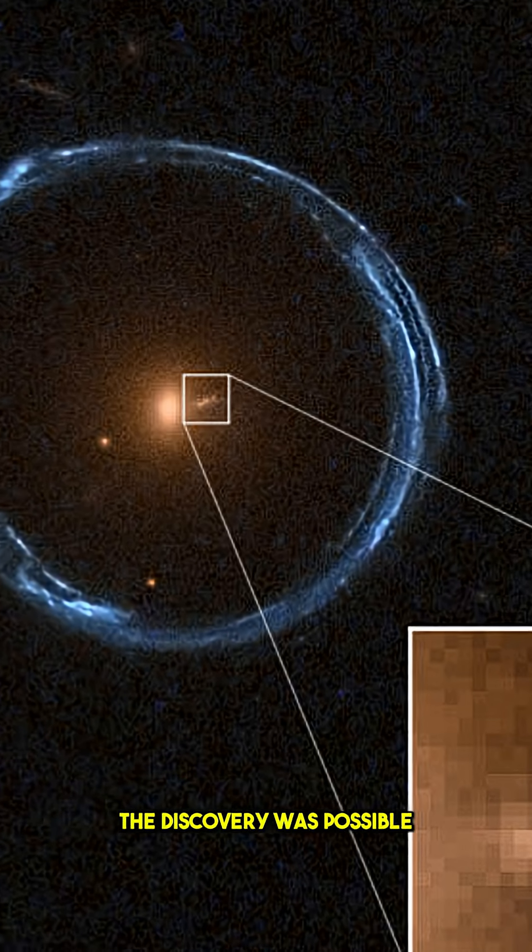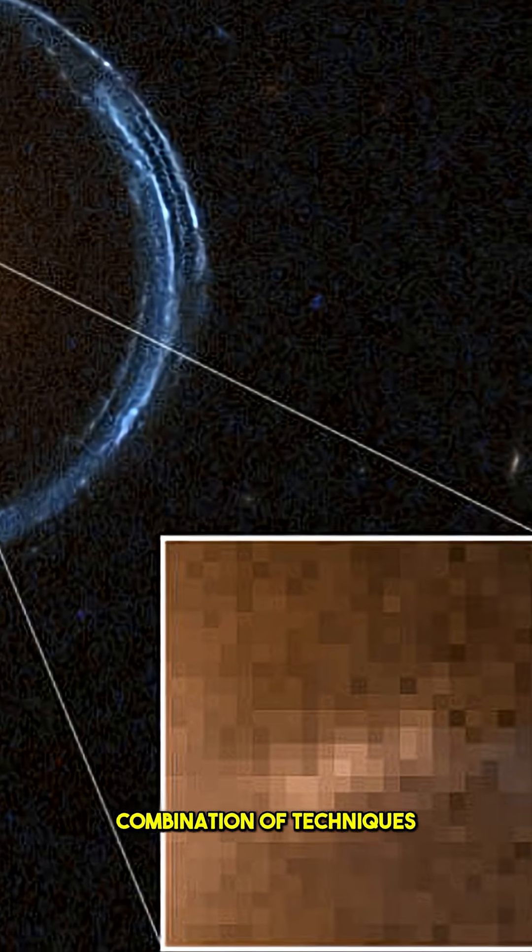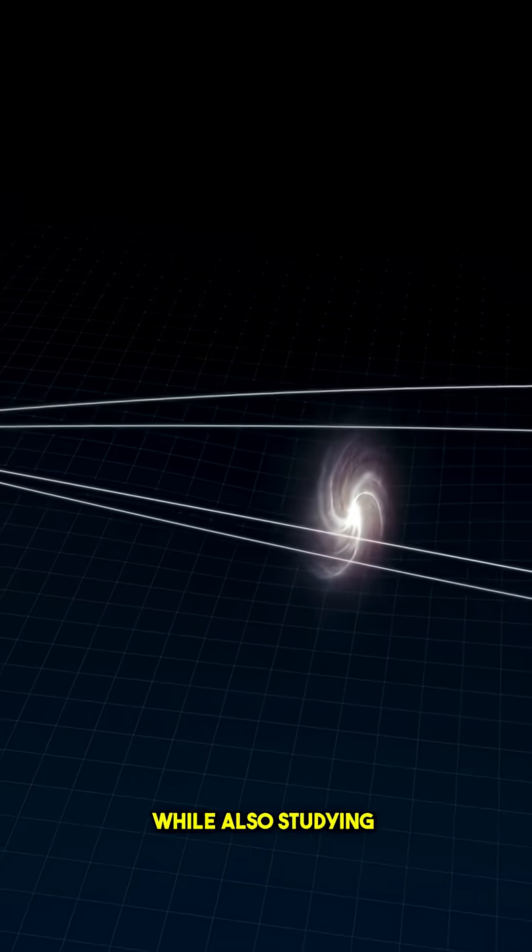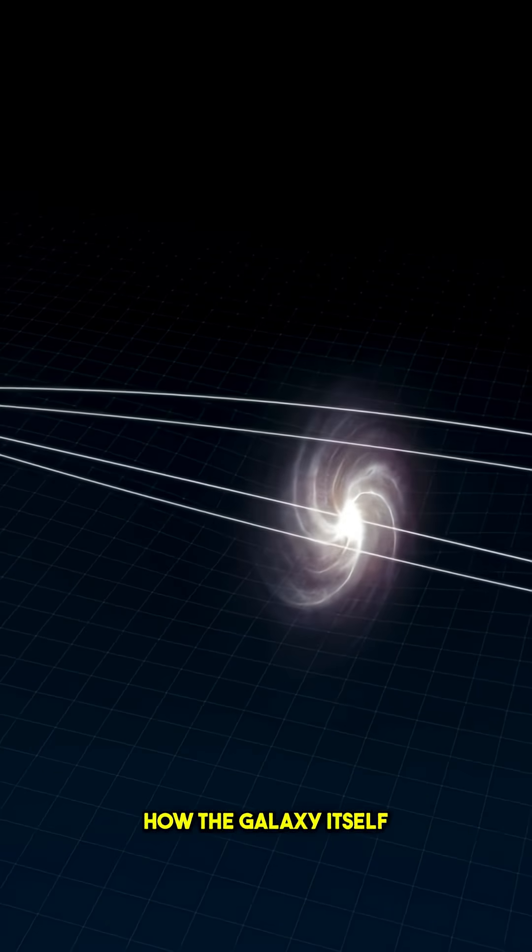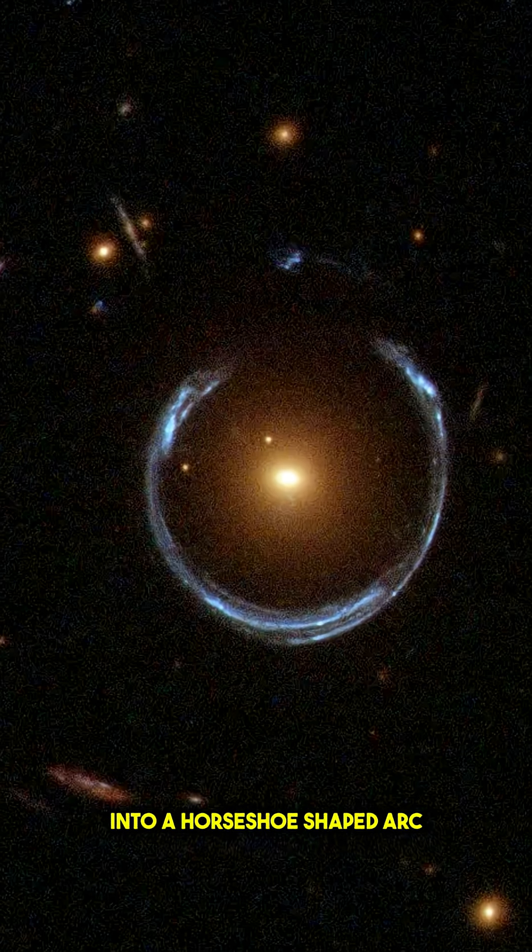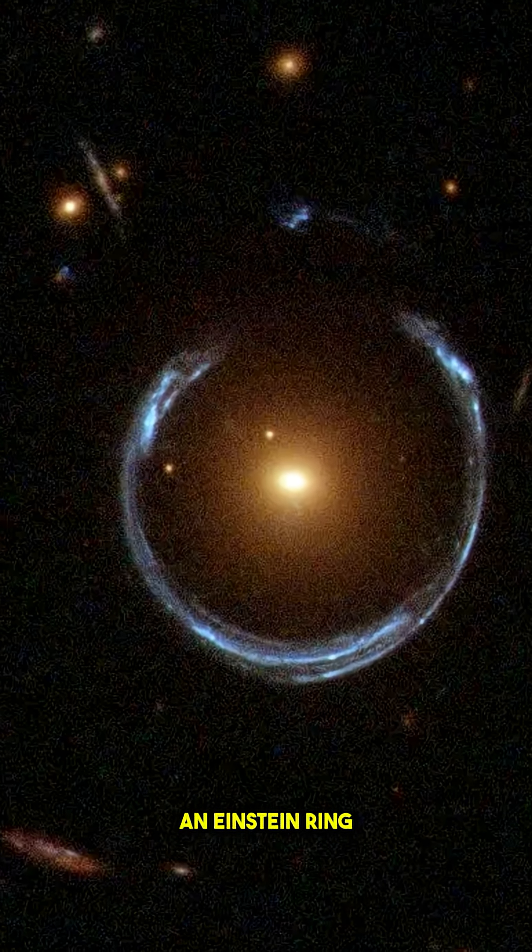The discovery was possible thanks to a clever combination of techniques. Scientists tracked how stars inside the galaxy were moving, while also studying how the galaxy itself bends light from a background galaxy into a horseshoe-shaped arc, an Einstein ring.